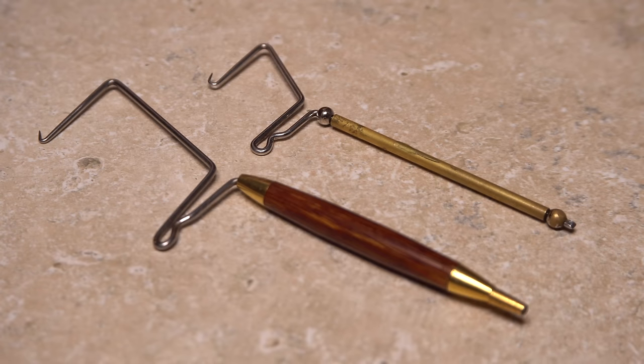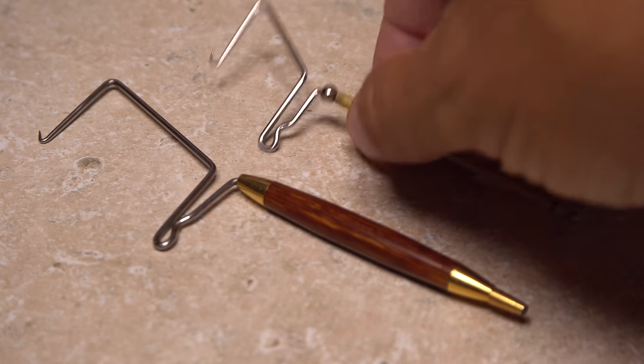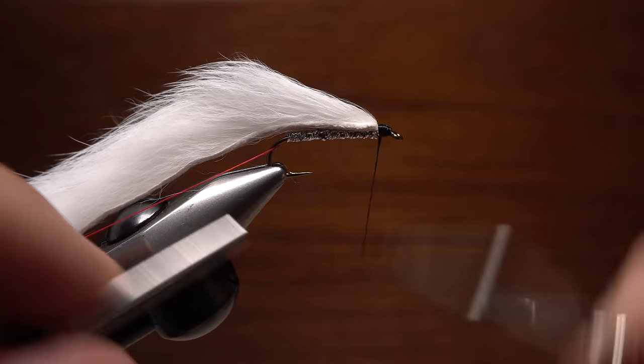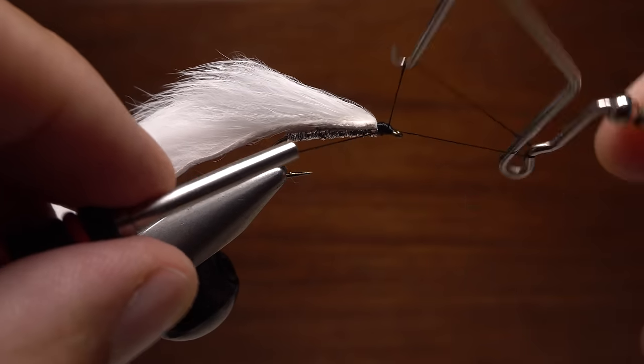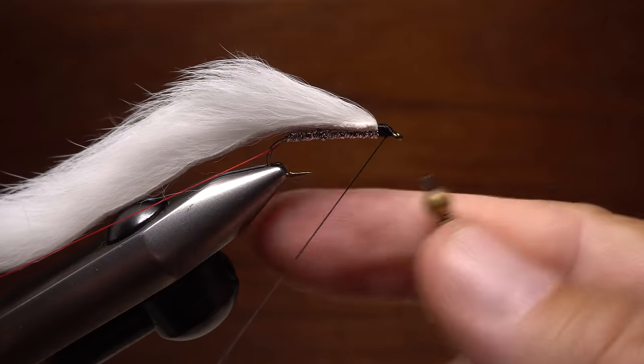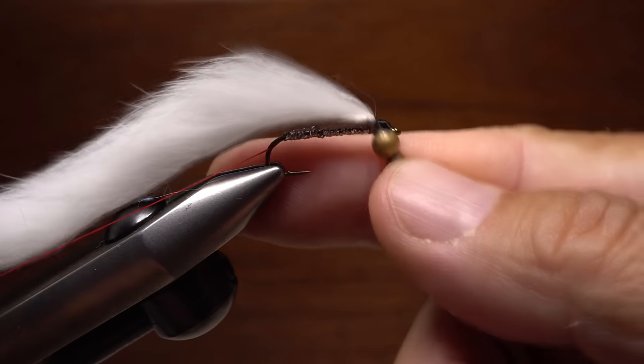I also used two different whip finish tools for this fly. A large one and a small or normal sized one. Pick up the normal sized tool and use it to do a five or six turn whip finish with the black thread at the head of the fly. Then snip or cut your thread free.